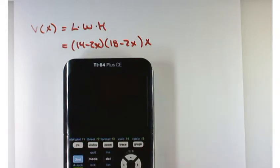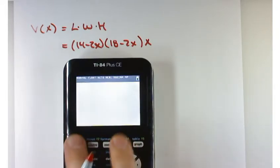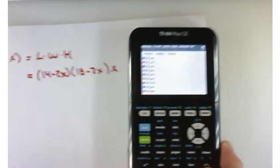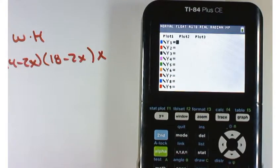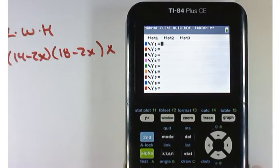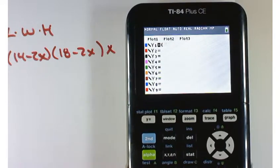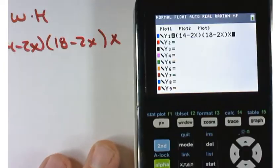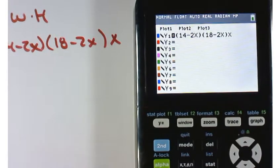First of all, let's plug that into our graphing calculator. Hit the y equals key and if there's anything there just clear it out. So it's going to be left parenthesis 14 minus 2x right parenthesis, then left parenthesis 18 minus 2x right parenthesis times X. That's our function.